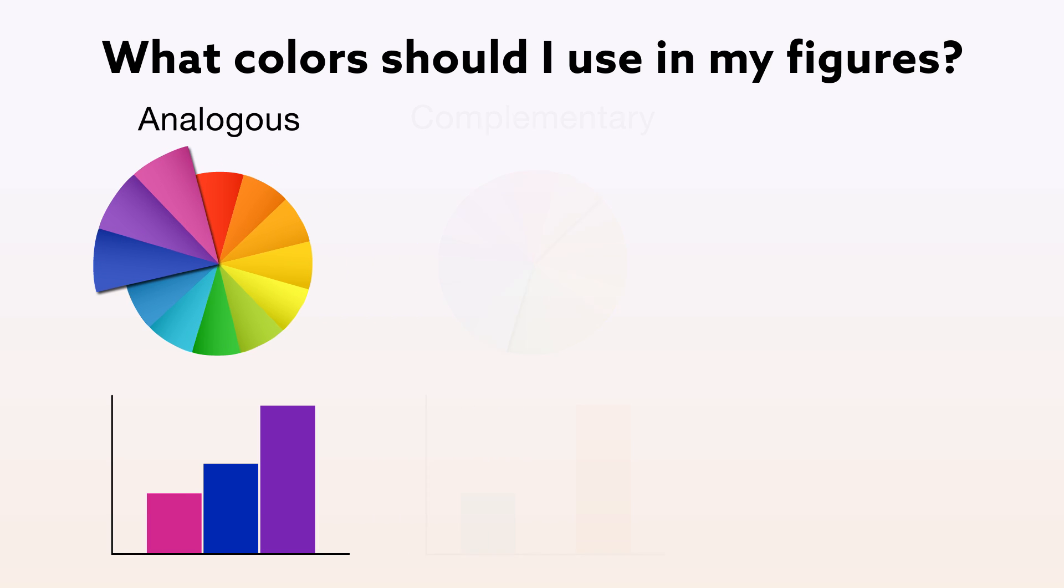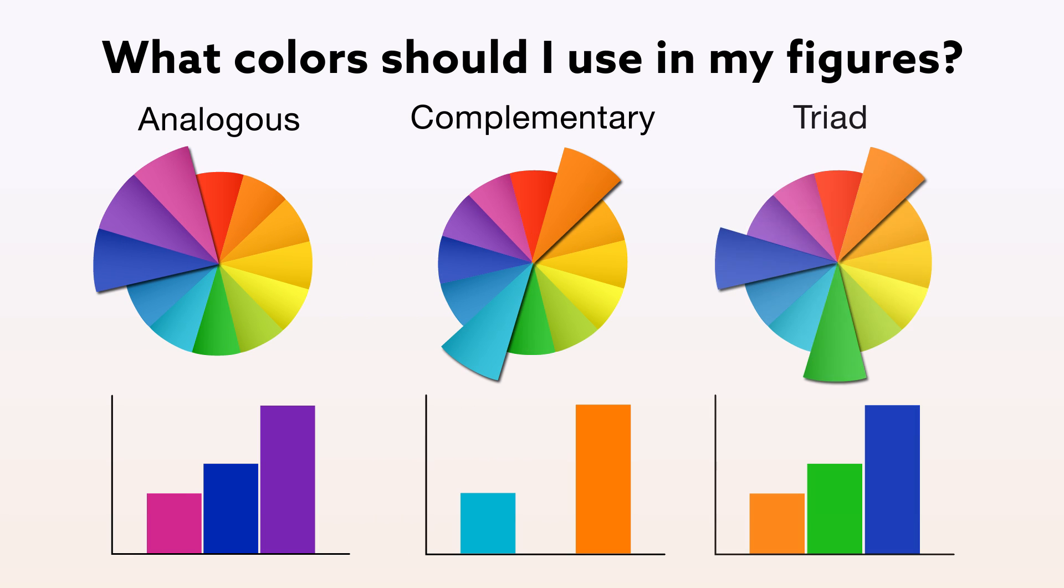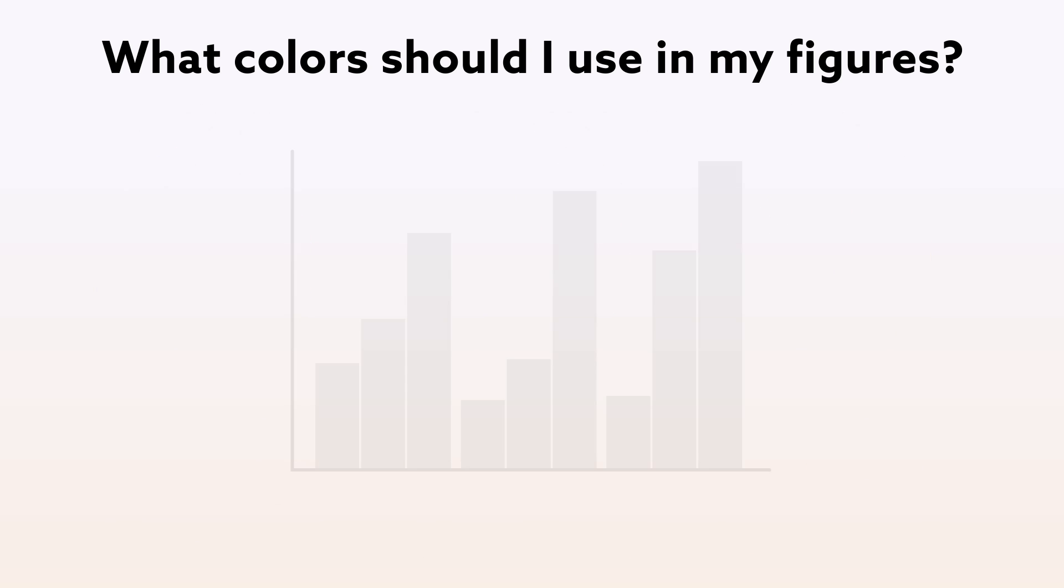On the other hand, complementary colors or a triad scheme are good for highlighting differences between sets of data. One useful trick is to show one set of data in a completely different color to visually offset that information and guide the reader's eye.